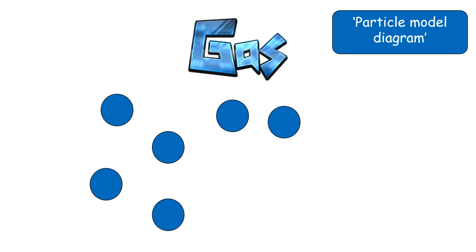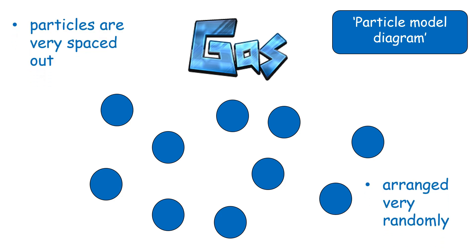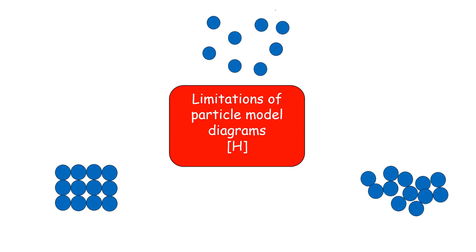Your final diagram for gas should look something like this. My goodness, look how spaced out the particles are in a gas. None of them are touching, and they are arranged very randomly. These diagrams that you have just drawn for solid, liquid and gas are known as particle model diagrams.